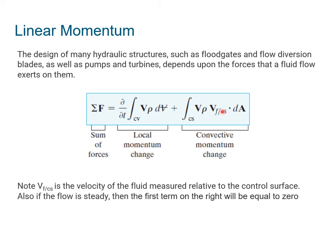So another note here is the way this is written. So these are velocities, but this symbol V_res, this is the velocity of the fluid measured relative to the control surface. Also, if the flow is steady, then the first term on the right is going to be zero. So oftentimes, in some cases, this term will be zero.